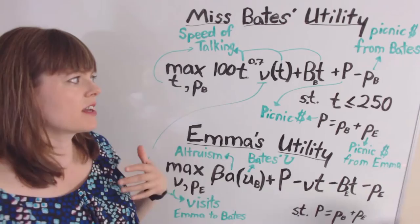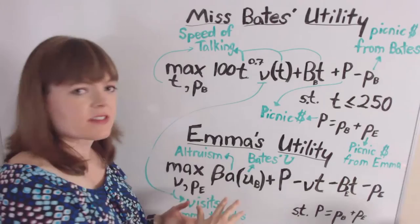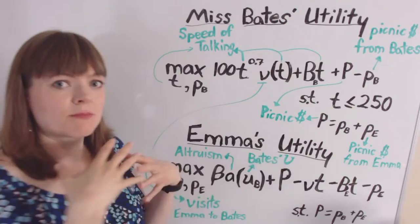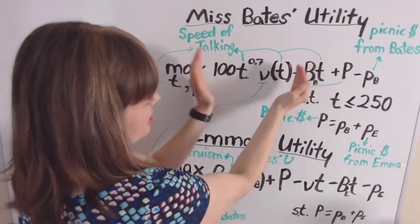One question here is whether Miss Bates is aware of this relationship — does she know that how fast she talks affects how often Emma wants to visit? In the book there are indications that she may not actually know this. Miss Bates may perceive Emma's visits as exogenous, but if she were perceptive, she would realize that these two things have a relationship. So she cares about her talking and the number of visits she gets from Emma where she gets a chance to talk.